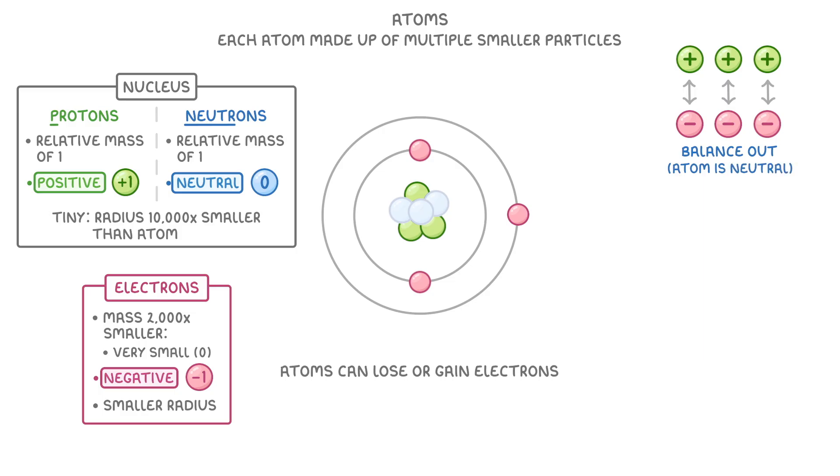Atoms can lose or gain electrons though, in which case the charges would no longer balance and the overall atom would become charged. When this happens we stop calling it an atom and instead call it an ion.